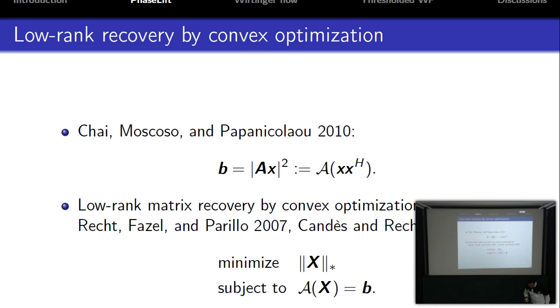A key observation was made by Chai, Moscoso, and Papanicolaou in 2008. Although we have nonlinear measurements, if we consider the self outer product X times X-adjoint, then the quadratic measurements b are actually linear measurements of this rank-one positive semi-definite matrix. So the question is how to recover a rank-one matrix from its linear measurements. We can look at the literature of low-rank matrix optimization.